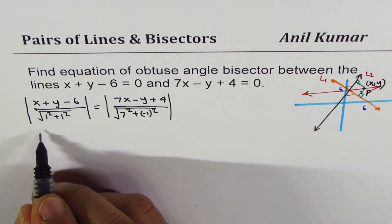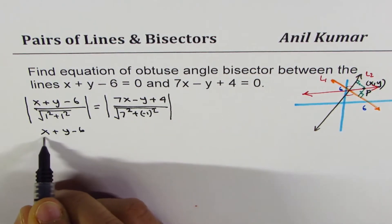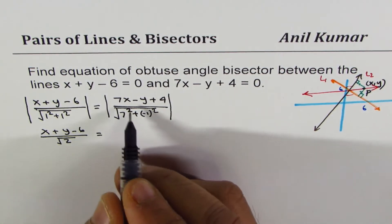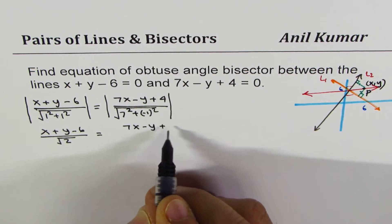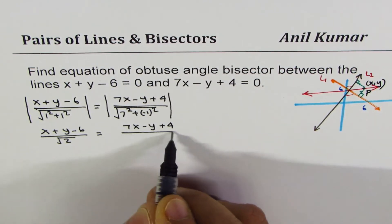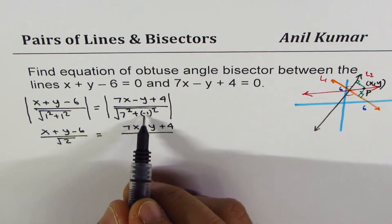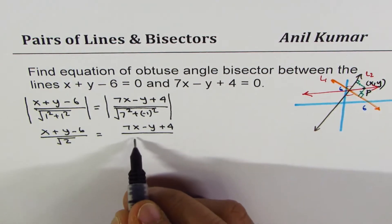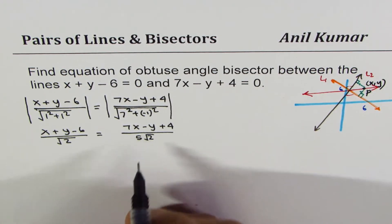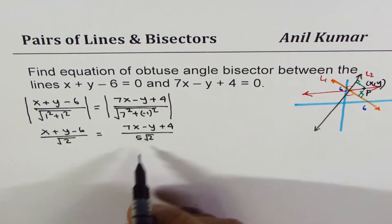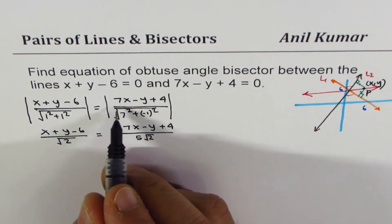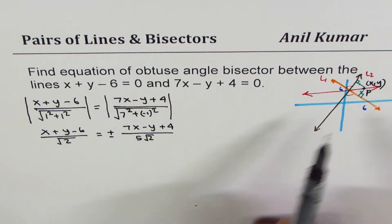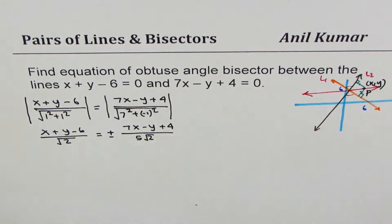Now 1² plus 1² gives sqrt(2), so we get |x plus y minus 6| divided by sqrt(2) equals |7x minus y plus 4| divided by sqrt(49 + 1) which is sqrt(50), and sqrt(50) equals 5*sqrt(2). The absolute value inside can be plus or minus, which leads to the two bisectors.